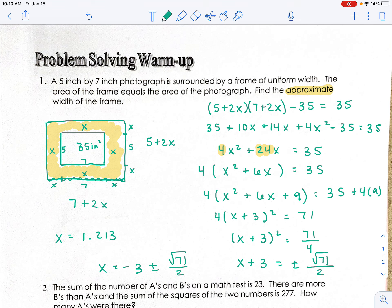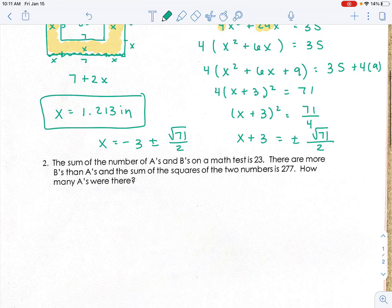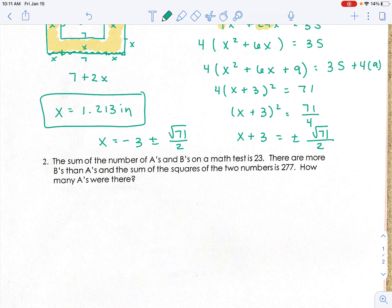you should get x equals 1.213. So I do want you to round three decimal places for me.